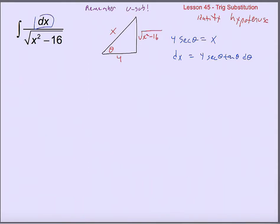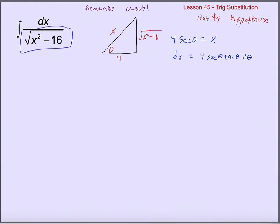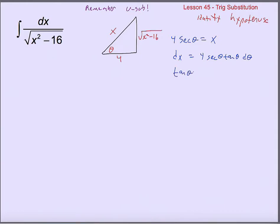I'm going to take out dx and replace it with 4 secant theta tangent theta d-theta. It won't help unless I can also take out the denominator — the square root of x squared minus 16. Looking at the triangle, that's the opposite leg across from angle theta. Using opposite over adjacent, that's tangent. So the tangent of theta equals the square root of x squared minus 16 over 4, meaning the square root of x squared minus 16 equals 4 tangent theta. Now I can do both substitutions: dx becomes 4 secant theta tangent theta d-theta, and the square root of x squared minus 16 becomes 4 tangent theta.